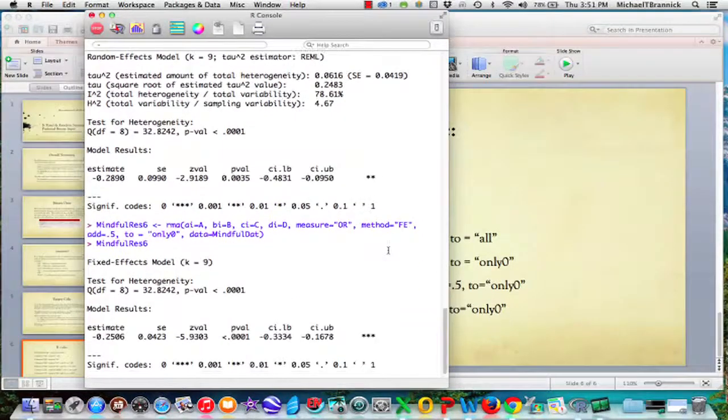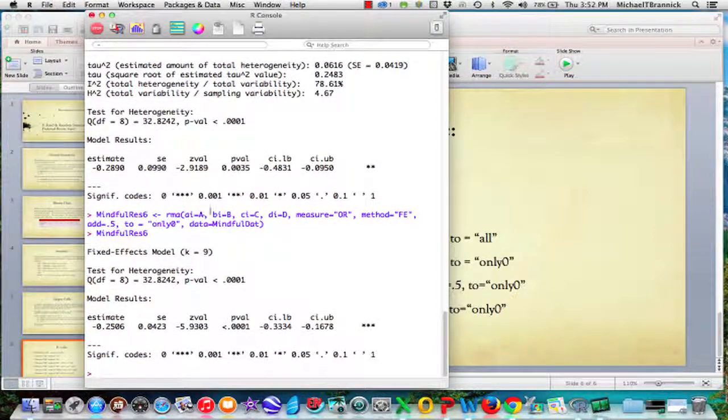The last analysis I wanted to show you is the sixth. Everything is the same except now we're going to do method is fixed effects. When we do that, there's no estimator for the random effects variance component. We still have heterogeneous studies, and we get 0.25 as our estimate. It goes from -13 to -16. You see a narrower confidence interval here because you don't have to add the value of tau into your uncertainty compared to the random effects analysis. That is how you would get a fixed effects analysis if you want one.